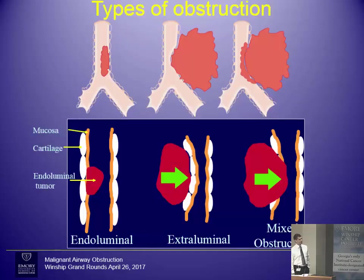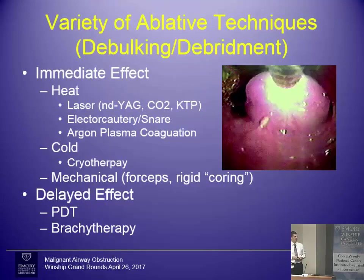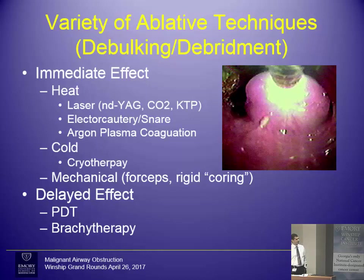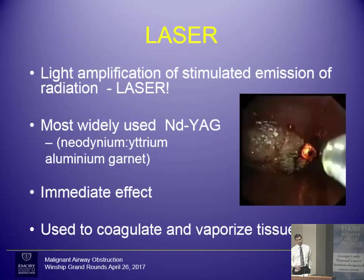Now going through the different types of therapies for airway obstruction. The most common we use are ablative techniques — synonymous with debulking or debridement of airway lesions. These are divided into immediate and delayed effects. Immediate effects are things we can do within 24 hours to improve oxygenation. Delayed effects are more subacute processes, including brachytherapy and photodynamic therapy, which debride airway lesions over weeks to months.